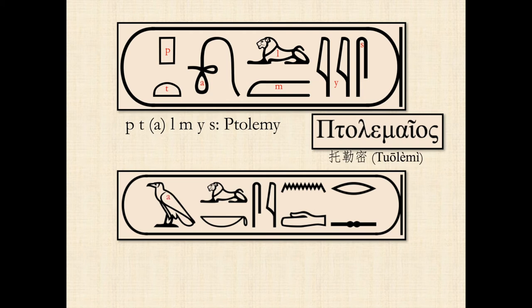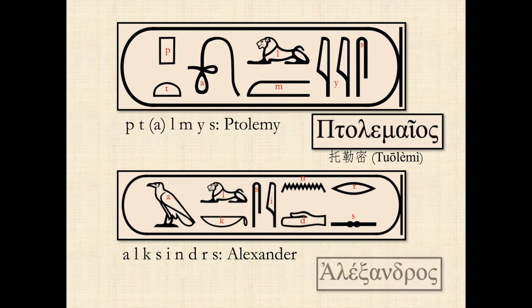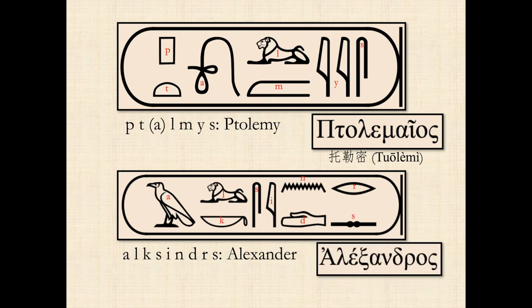And then A, L, K, S, E, N, D, R, S — Alksindras, or Alexander, or Aleksandros as we would say in Greek. Or in Chinese, it's Yali shanda.